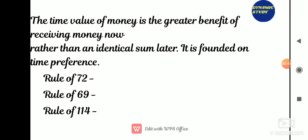To understand time value of money by example: we know that rupee 100 in hand today is more valuable than rupee 100 receivable after a year. We will not part with rupee 100 now if the same sum is repaid after a year. But we might part with rupee 100 now if we are assured that rupee 110 will be paid at the end of the first year. This additional compensation required for parting with rupee 100 today is called interest, or the time value of money.